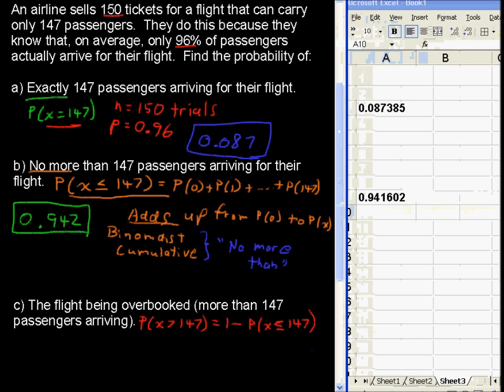Now, back to the problem in c. We're not saying no more than, we're saying greater than. Well, the complement of greater than 147 is no more than 147. So, because we already have this information from choice b, we can just say this equals 1 minus .942. And you can use Excel to do that, of course. Or you can try to do it in your head, and let's see if I can do it while I am speaking to you .058.